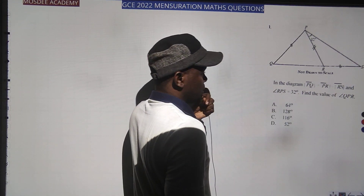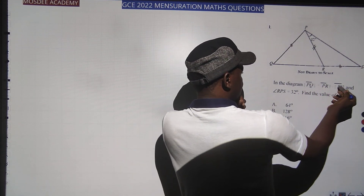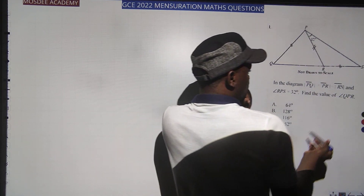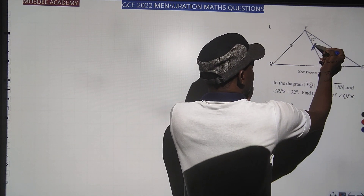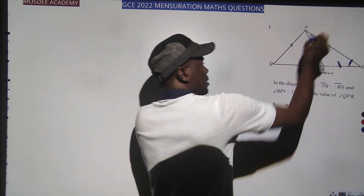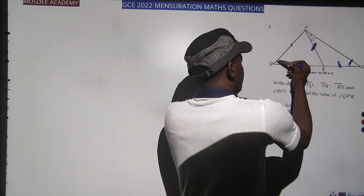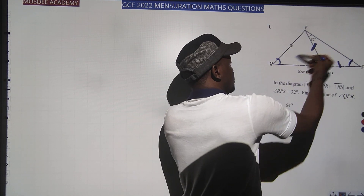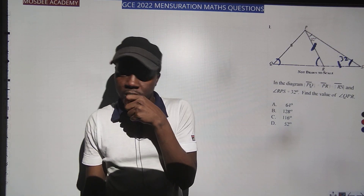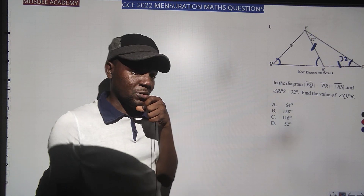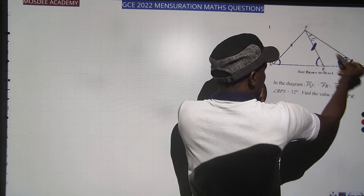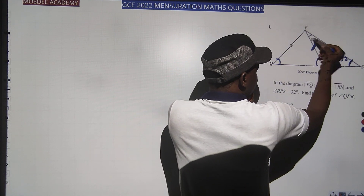In the diagram, PQ = PR = RS and the measure of angle RPS is 32°. These equal sides tell us this is an isosceles triangle — the base angles are equal. Triangle RPS is isosceles and triangle PQR is also isosceles. Using the exterior angle theorem: the exterior angle equals the sum of two opposite interior angles, so angle R = 32 + 32 = 64°.